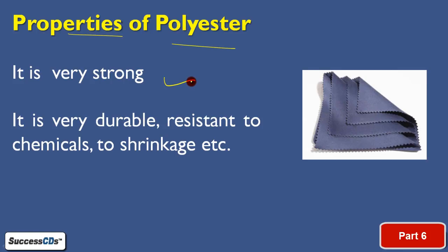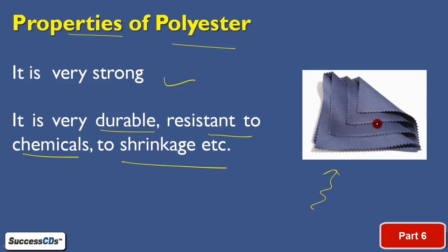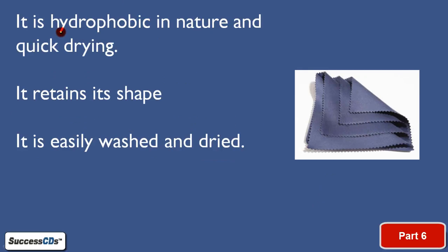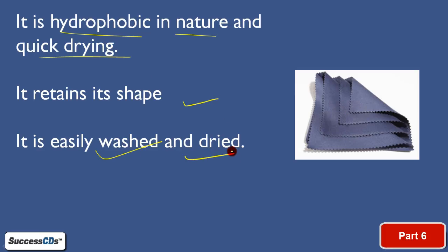Looking at the properties of polyester: it is very strong — as you can see, pet bottles are quite strong. It is also durable and resistant to chemicals. As shown in the figure, mats made of polyester do not shrink at all. It is hydrophobic in nature and quick drying — it does not retain water for long, dries quickly, retains its shape, and is easy to wash and dry.